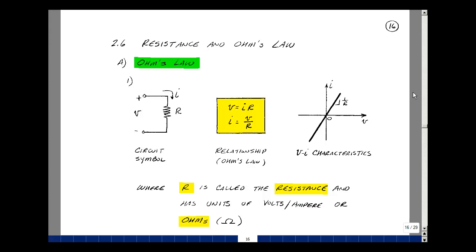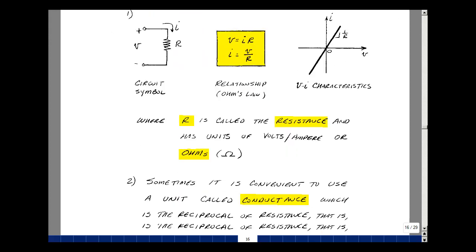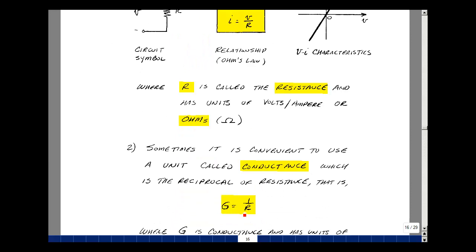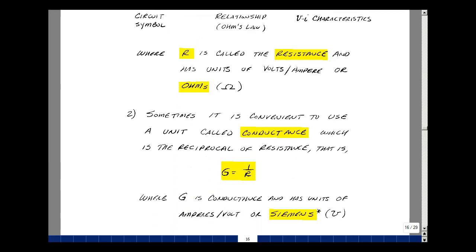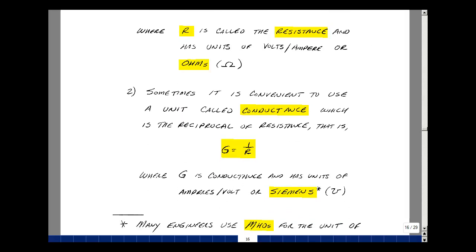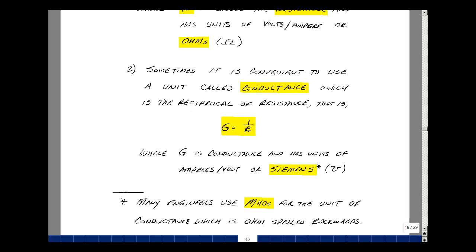Now sometimes the resistance is very small, and it's convenient to use this second equation and to define another term called conductance. Conductance is going to be the reciprocal of R, and so the units would then be amperes per volt. Again, it's a mouthful, so it's been renamed as Siemens, named after Ernst Siemens, an inventor who started the Siemens company, which is a large telecom and electronics company in Europe.